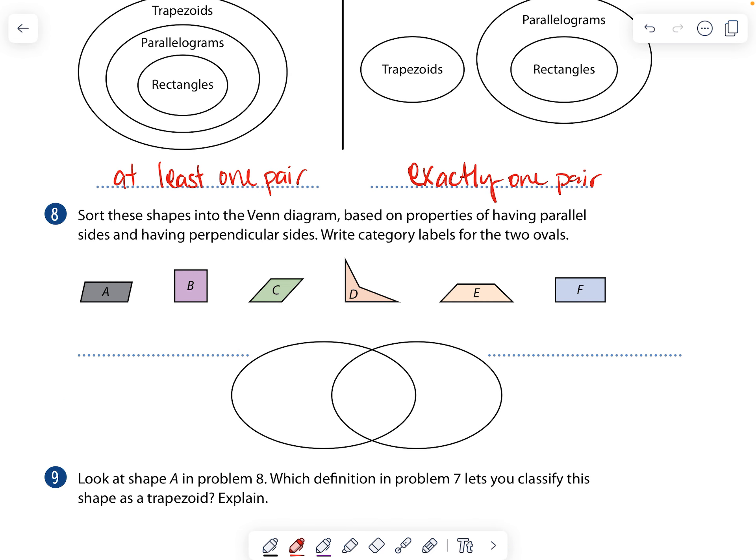Okay. Sort these shapes into the Venn diagram. Having parallel sides and perpendicular. You should know what is parallel and what is perpendicular because of our song. Feel free to sing it if you need. Remember, parallel lines never meet. Intersecting lines make Vs. Perpendicular lines meet at 90 degrees. Okay. Do the actions if you need. Okay. So, and then there's can be some with both.